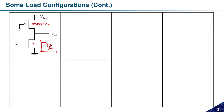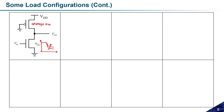Let me draw the equivalent circuit. If Vin equals one, the nMOS transistor is on, and since the pMOS transistor is always in the on state, the equivalent circuit looks like two resistances in series: Ron of the pMOS transistor and Ron of the nMOS transistor, with Vout taken from the midpoint.